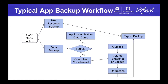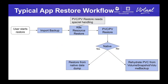On the reverse side, the restore workflow: a user starts a restore, imports the backup into the cluster, and then first restores the Kubernetes resources. PVs and PVCs need to be handled specially because there are many dependencies. In the native way, the application can restore from a native data dump. In the non-native way, just rehydrate PVCs from a volume snapshot or volume backup. So we have these workflows, and what building blocks are needed to support them is what we want to answer in this working group.